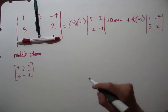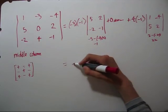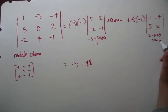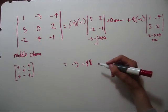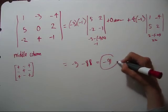So now would be a good time to find those determinants. So we're going to have 3 times negative 1, which is minus 3, and negative 4 times 22, which is negative 88. And so our determinant is negative 91.